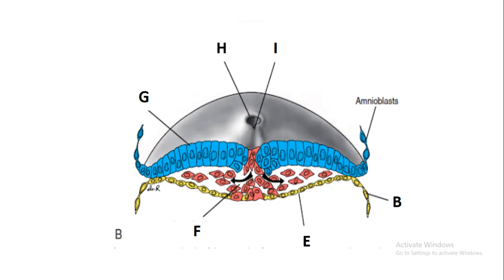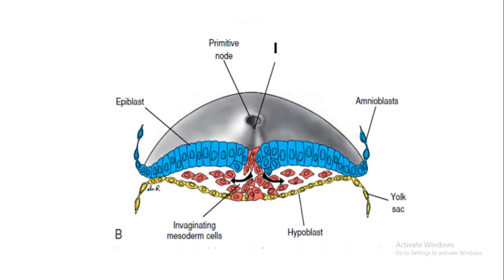A is the amnioblast, which is being created by the epiblast. B is the yolk sac from the endoderm or hypoblast. E is the hypoblast, which is supposed to develop into the endoderm. F is the invaginating mesoderm cells coming from the ectoderm. G is the epiblast, which will later develop into the ectoderm. H is the primitive node and I is the primitive streak, both playing a role in the formation of the neural tube.